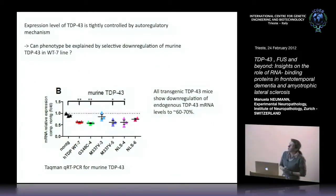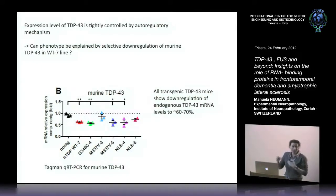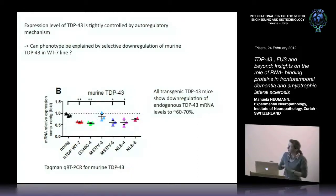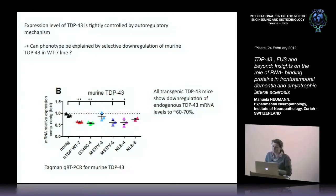We thought that the phenotype might be explained by selective downregulation of endogenous mouse TDP. Taqman RT-PCR of endogenous mouse TDP showed a downregulation of around 60 to 70 percent, but this was more or less similar across all lines. This most likely does not explain the phenotypic differences between wild-type overexpressing mice and the mutant lines.